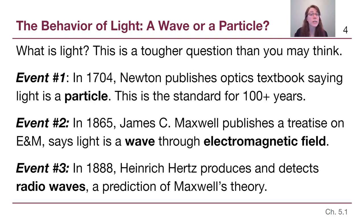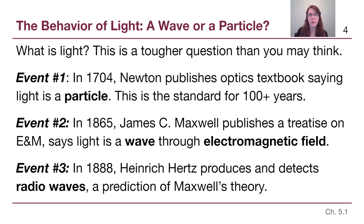Our discussion starts with the question: what is light? It's a tougher question than you might think. We're going to focus on three different milestones in a brief history — we don't need to memorize names or dates, but it's important to understand the scientific process is a long one. Starting in 1704, Isaac Newton published an optics textbook used for over a hundred years, suggesting that light is a particle. He sent white light through a prism and saw the different colors of the rainbow, and his model was that light is made up of several different colored particles that add together to create white light. That model held for over 150 years.